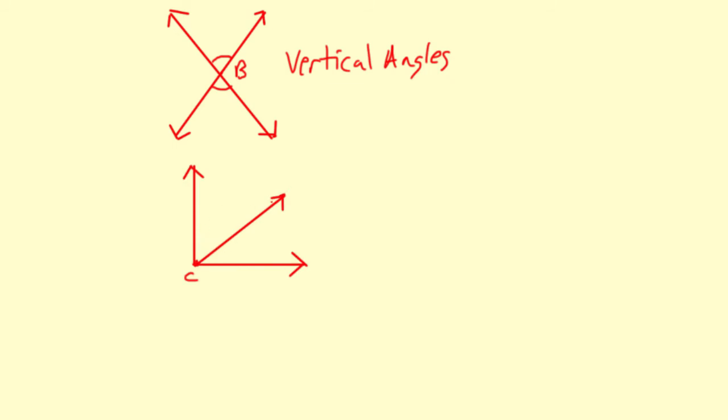So imagine that this ray here in the middle is kind of dividing up this right angle here. So this is 90 degrees right here, and then you have two angles here. This one here and then this one here. Well, the two of these together add to 90 degrees and they're complementary angles is what they're called.